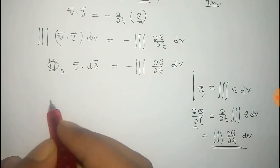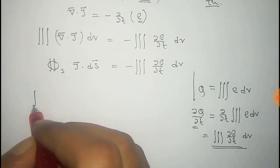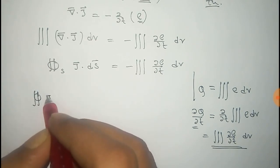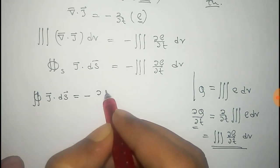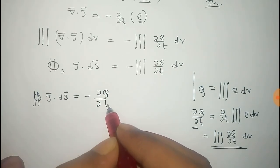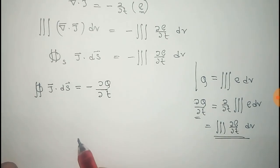That is equal to del Q del T in that place. So, surface integral closed J dot dS equals minus del Q del T.